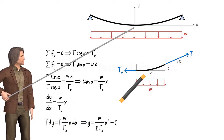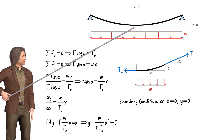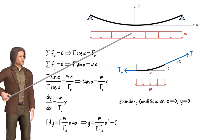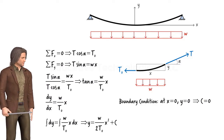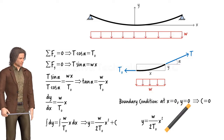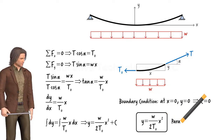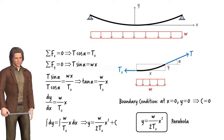Since at the origin, where X equals zero, Y is also zero, we can determine the value of C — it comes out to be zero. Hence, the equation that describes the shape of the cable is Y equals Wx squared over 2T0. This is a parabolic function. Therefore, when a cable is subjected to a linear distributed load, its shape can be defined using a parabola.